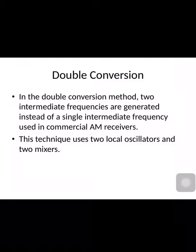But in a frequency modulated signal, when the FM signal is received, it has to be converted into the original message signal. For that, before detection, we use two stages of intermediate frequency generation — meaning two mixers — and we generate two intermediate frequencies. This technique uses two local oscillators and two mixers. This is called double conversion.